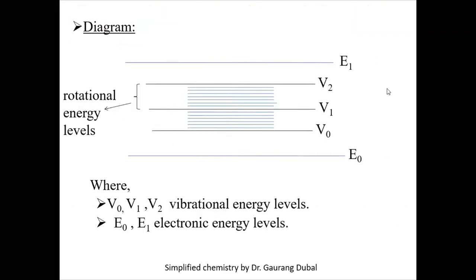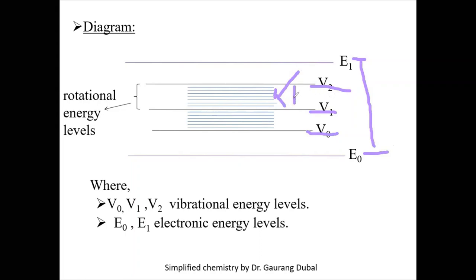If you see the diagram, it will be very clear. E represents the electronic energy level, which is the biggest. If you divide it, you get vibrational levels — vibrational levels are a part of the electronic level. The rotational levels are part of the vibrational levels. So rotational levels are very small, vibrational levels are bigger, and electronic levels are the biggest. Electronic levels possess both rotational and vibrational energy levels.